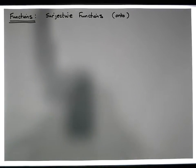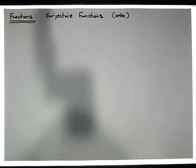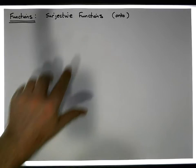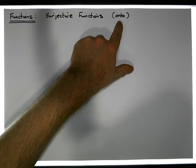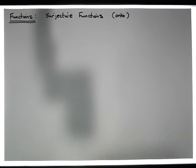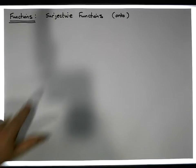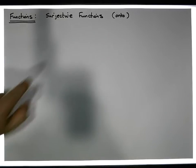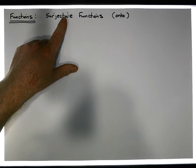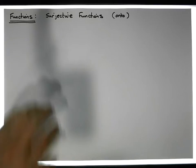Hi guys, this is Jonathan Lambert with the Mathematics Development and Support Service at the National College of Ireland. This short video, another in our series dealing with functions, is going to concentrate on the definition of what a surjective function is — a function also known as 'onto'. If we want to test whether a function is surjective, we need to have a well-defined function in the first place.